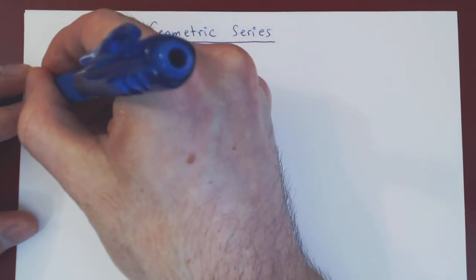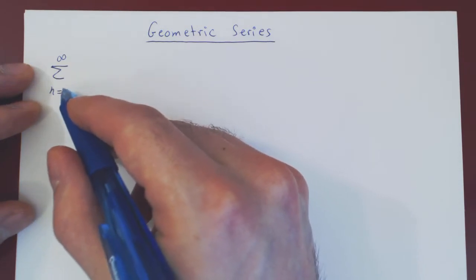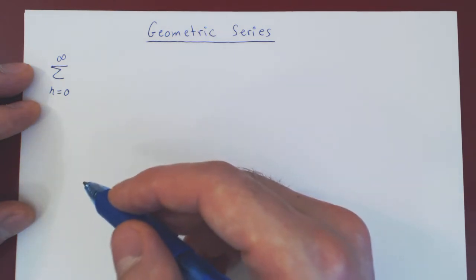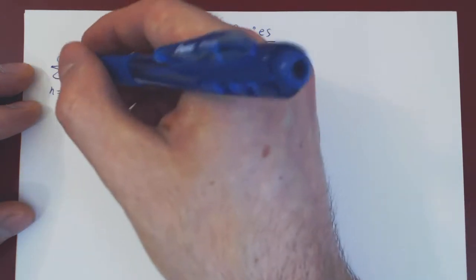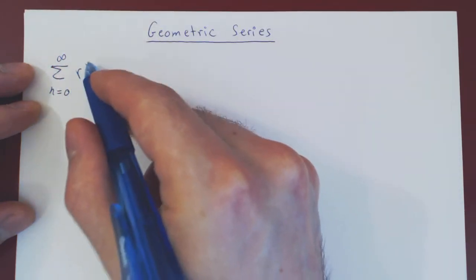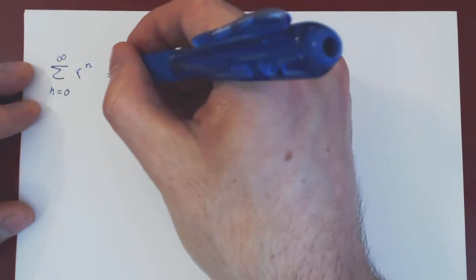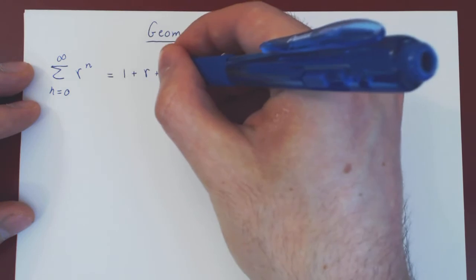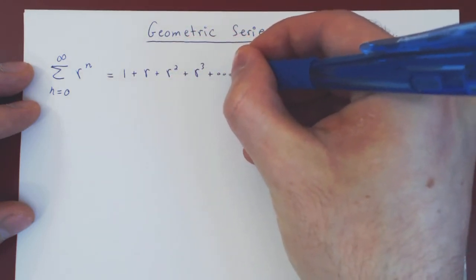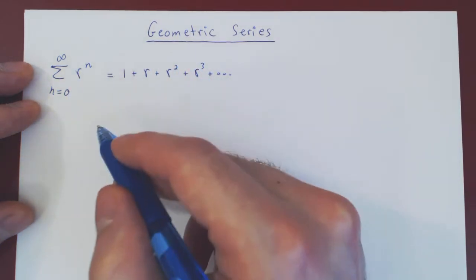We are summing from n going from 0 to infinity. We'll see later on that we can change the start of our summation, but for now, to simplify the discussion, we'll start with 0. All we're summing is powers of a fixed number — r to the n, where r is fixed. So r to the 0 is 1, plus r, plus r squared, plus r cubed, and so forth. We're summing consecutive powers of r, where r is a fixed real number.